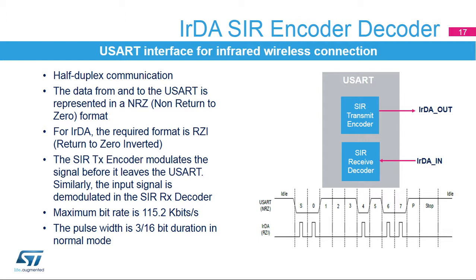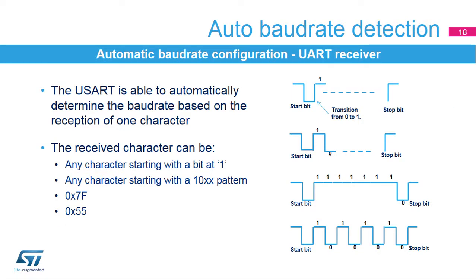The USART only supports bit rates up to 115.2 kilobits per second for the SIR ENDEC. In normal mode, the transmitted pulse width is specified as 3/16ths of a bit period. The USART receiver is able to detect and automatically configure the baud rate based on the reception of specific characters. The received character can be any character starting with a bit at 1; in this case, the USART measures the duration of the start bit from falling edge to rising edge. Or any character starting with a 10XX pattern; in this case, the USART measures the duration of the start and of the first data bit from falling edge to falling edge, ensuring better accuracy in the case of slow signal slopes.